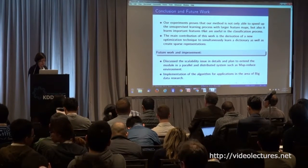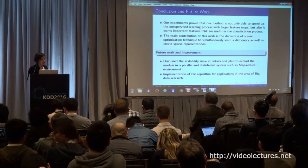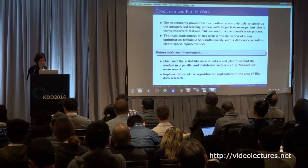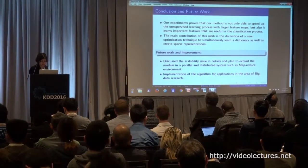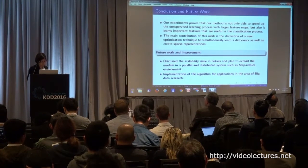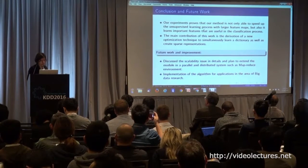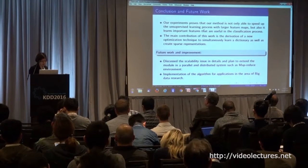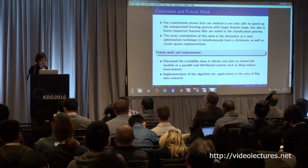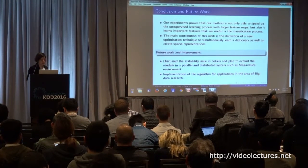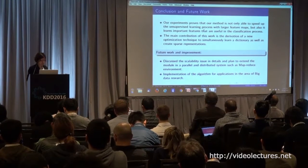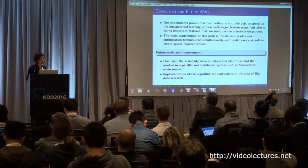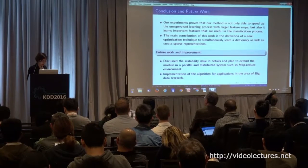In conclusion, this algorithm improves the speed of unsupervised learning and extracts better features, as shown by higher classification results. The main contribution was introducing a new optimization technique — the SMO — for the first time, which speeds up the whole process. In future work, since this algorithm already has very good scalability, the authors plan to implement it with MapReduce to give it an even higher scalability property.